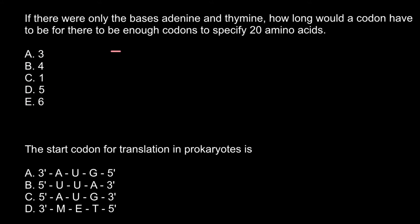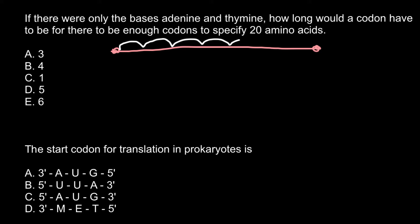So imagine that this is messenger RNA, and here is a start codon, here is a stop codon, and all the proteins on this messenger RNA are coded by trinucleotides that we call codons. So each amino acid is coded by 3 nucleotides.